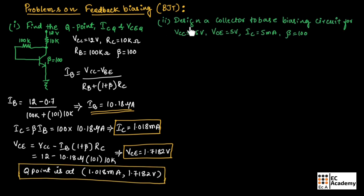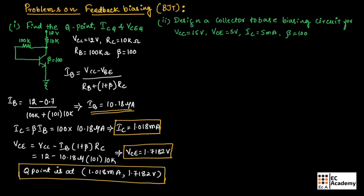Now let us take the second problem, where we need to design a collector-to-base biasing circuit for VCC equal to 15 volts, VCE equal to 5 volts, IC equal to 5 milli ampere, and beta equal to 100. Designing the circuit means once we do the calculations, we write the circuit and substitute all calculated values. First, let us find all the current components of the biasing circuit.